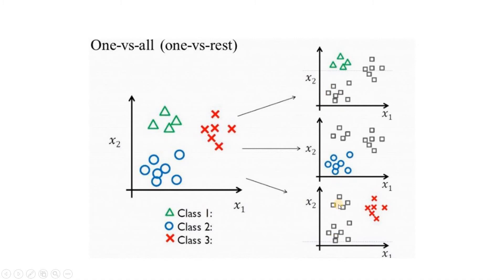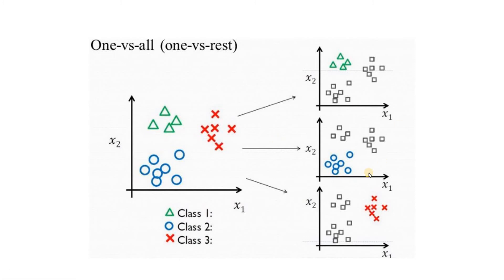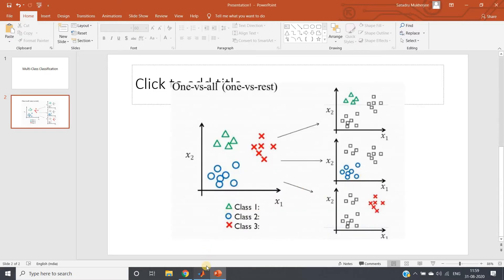Since three different classes are present, we form three different binary classifiers. Then for a new data point we want to predict, we pass that data point through all the classifiers and calculate the probability that it belongs to the positive class of each classifier. The class with the maximum probability is what we conclude the new data point belongs to.